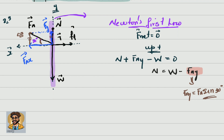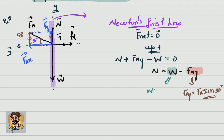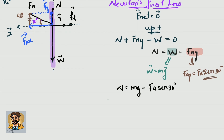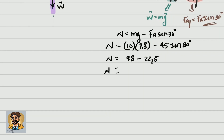Weight is the product of mass and acceleration due to gravity. Substituting both formulas: normal equals mg minus F_applied times sine 30 degrees. Substituting numerical values — 10 times 9.8 minus 45 times sine 30 — we get a normal force of 75.5 newtons. You get one mark for the equation, one for substituting 10 times 9.8, one for substituting 45 sine 30, and one for the final answer — four marks total.